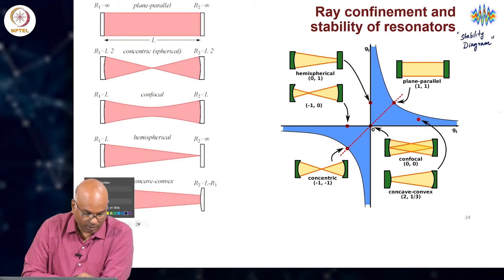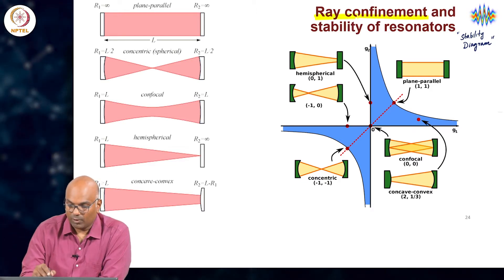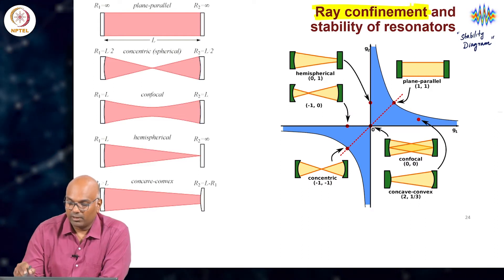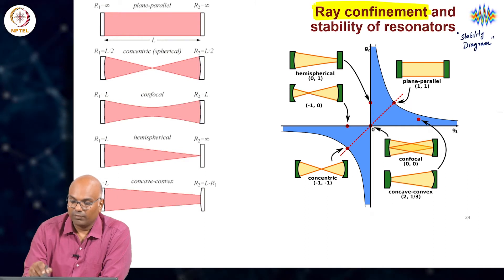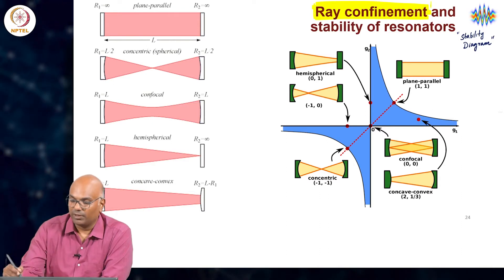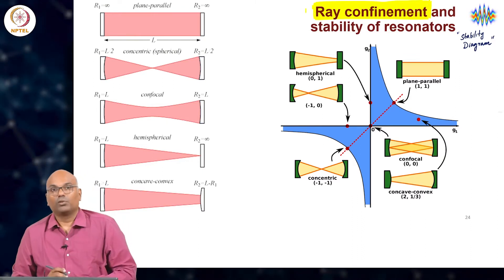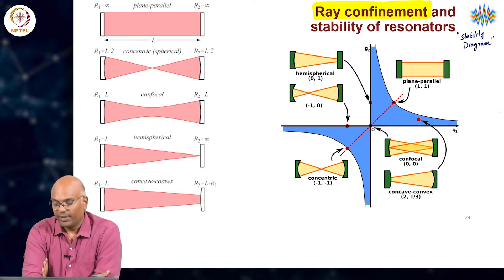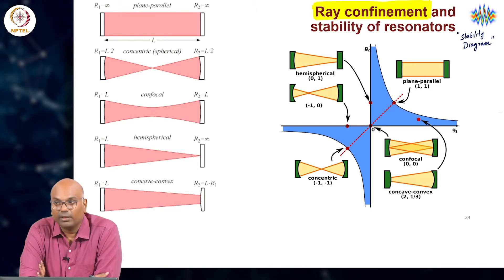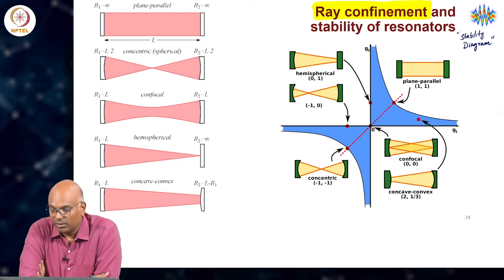From the perspective of what I have called ray confinement here, although we have been speaking about waves, you can think of the ray as the k-vector of the wave that is propagating — an approximate definition of ray optics. We have not spoken about ray optics at all so far in this course, but it is a useful guide. From the perspective of confining rays and thereby achieving stability of the wave that is inside the resonator making several round trips.